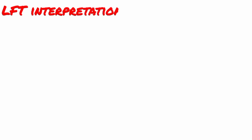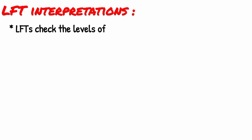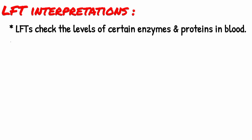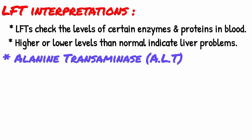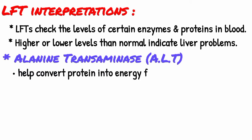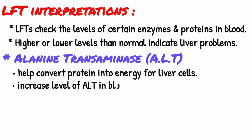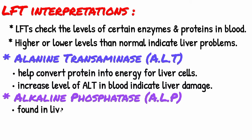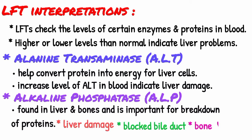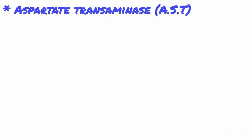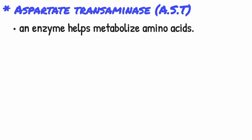Now we will discuss what liver function tests interpret. Liver function tests check the levels of certain enzymes and proteins in the blood; levels that are higher or lower than normal can indicate liver problems. For alanine transaminase (ALT): ALT is an enzyme found in the liver that helps convert proteins into energy for liver cells. When the liver is damaged, ALT is released into the bloodstream and levels increase. For alkaline phosphatase (ALP): ALP is an enzyme found in the liver and bone and is important for breaking down proteins. Higher than normal levels may indicate liver damage or disease, such as a blocked bile duct or certain bone diseases. For aspartate transaminase (AST): AST is an enzyme that helps metabolize amino acids; an increase in AST levels may indicate liver damage, disease, or muscle damage.